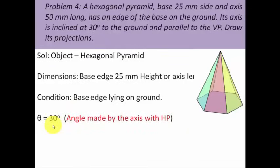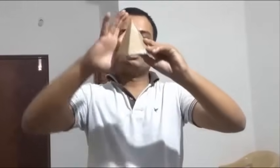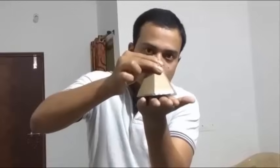Now that we've read the question, this is the object under consideration — a hexagonal pyramid with six base edges and an apex at the top. All base edges are 25 millimeters each and this axis length has been given as 50 millimeters. Condition one: the axis makes an angle of 30 degrees with the horizontal plane, so the axis starts from the apex toward the center of the hexagonal base and makes a certain angle with the horizontal plane.